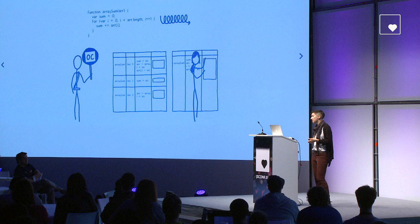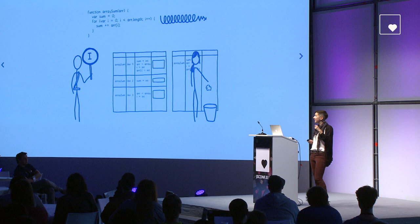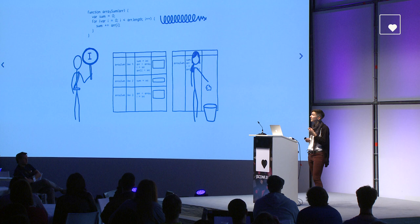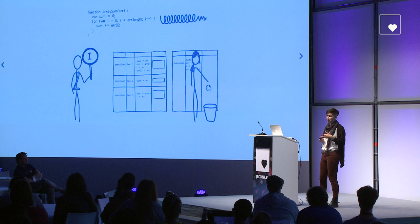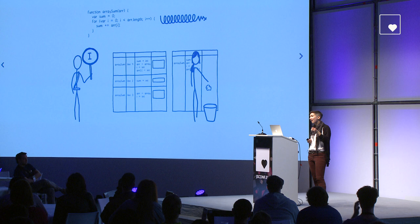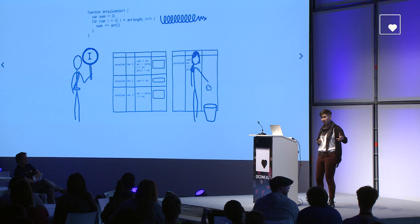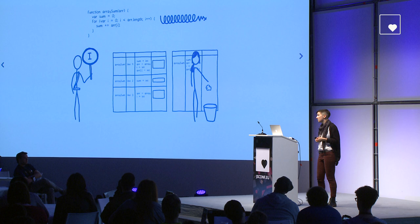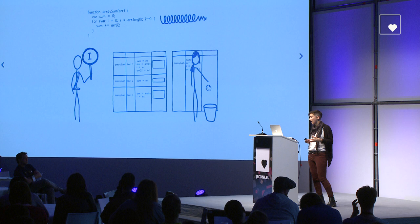In order to make the faster version of the function, the optimising compiler has to make some assumptions. For example, if it can assume that all objects created by a particular constructor have the same shape — the same property names added in the same order — then it can cut some corners. But with JavaScript, there are never any guarantees. You could have 99 objects that all have the same shape, but then the hundredth has a different property. So the JIT assumes it made the wrong assumptions and trashes the optimised code — this process is called de-optimisation or bailing out.